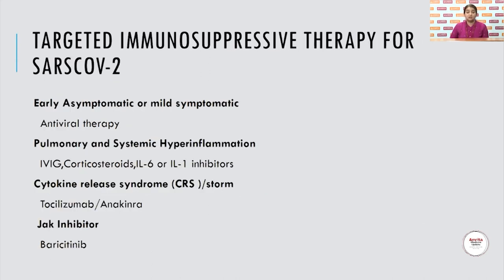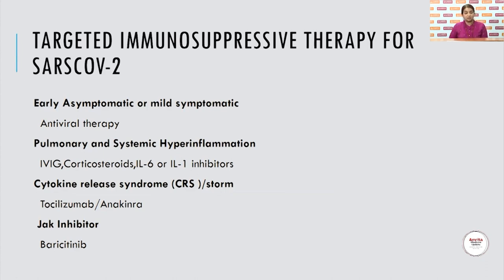Targeted immunosuppressive therapy for SARS: For early asymptomatic or mild symptomatic disease, give antiviral therapy. For pulmonary and systemic hyperinflammation, use IVIG, corticosteroids, or IL-6 or IL-1 inhibitors. For cytokine release syndrome or cytokine storm, give tocilizumab or anakinra, and the JAK inhibitor baricitinib is also extremely useful.